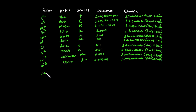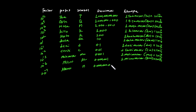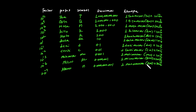10 to the power of minus 9 is Nano. 1 nanometer is equal to 1 times 10 to the power of minus 9 meters.